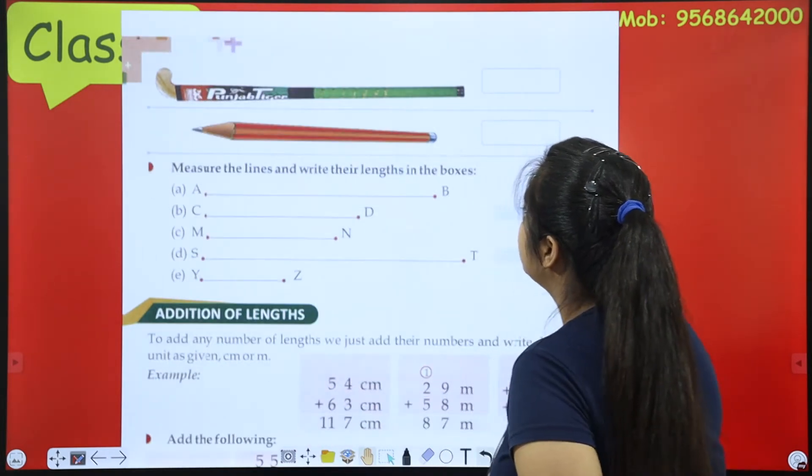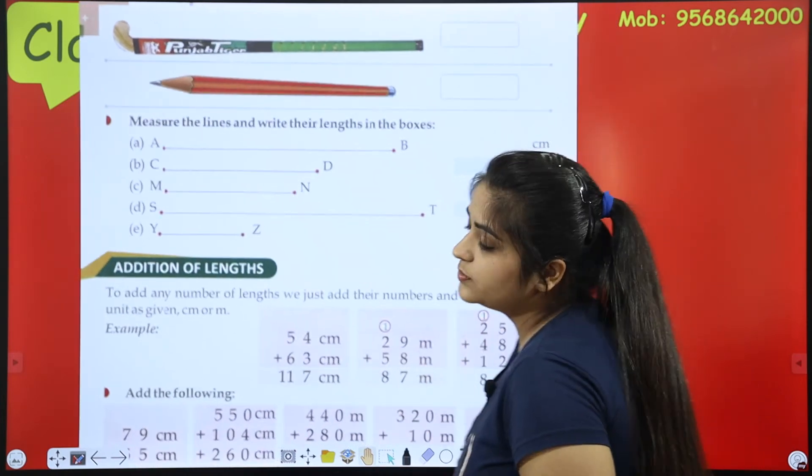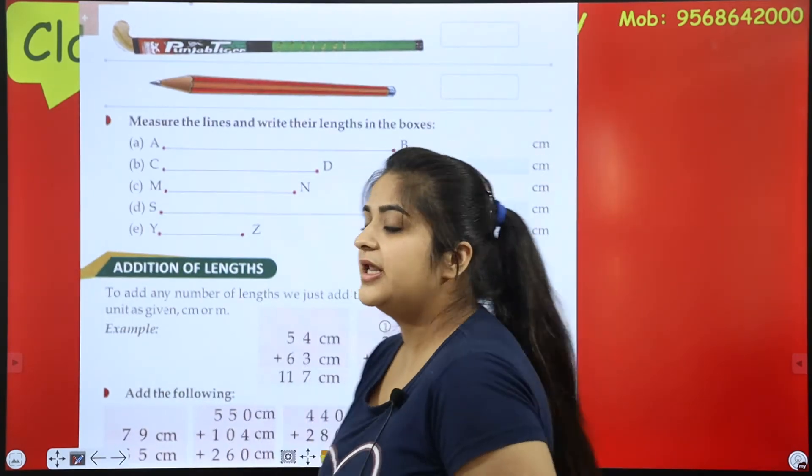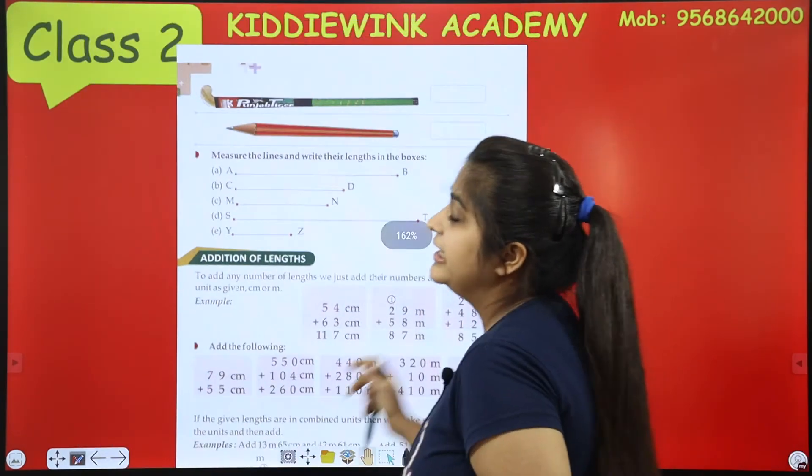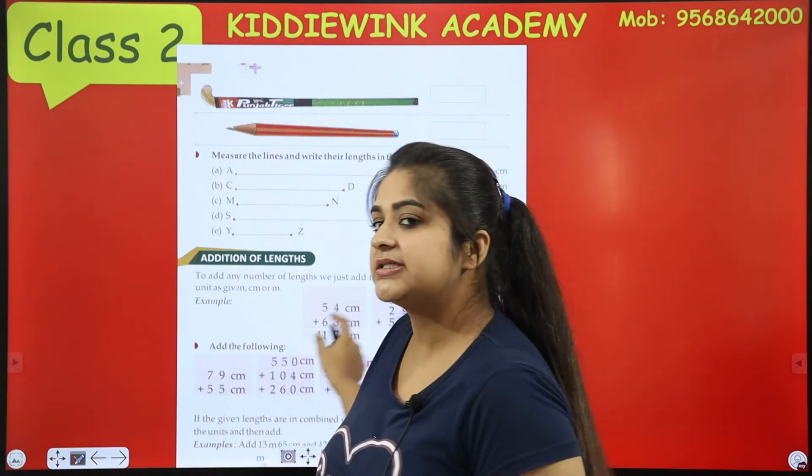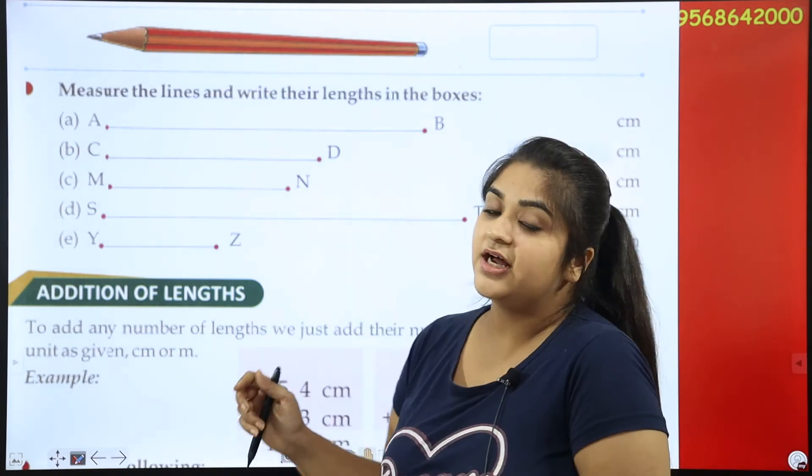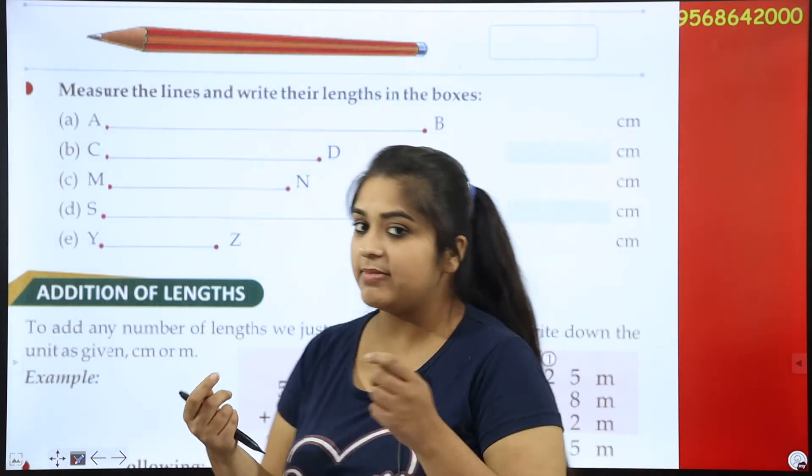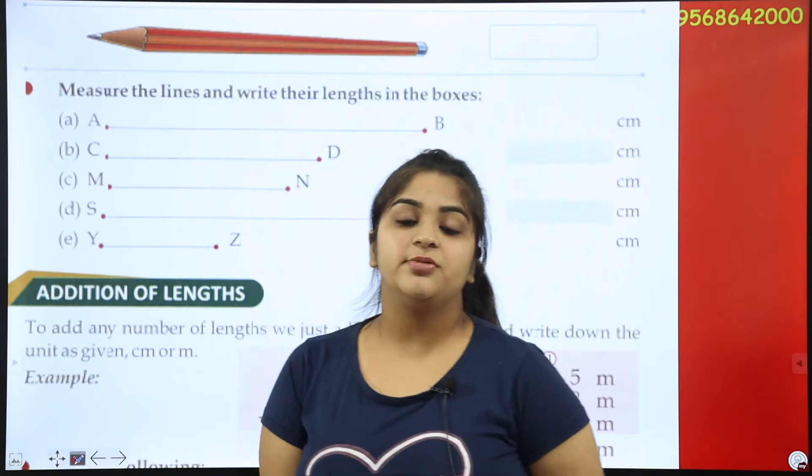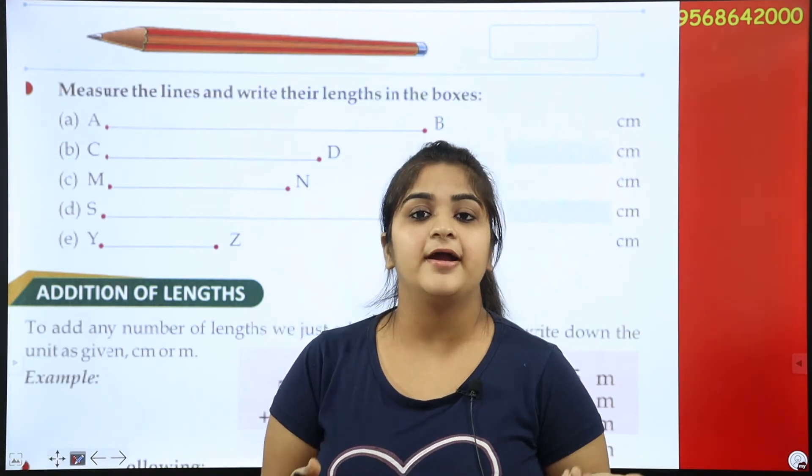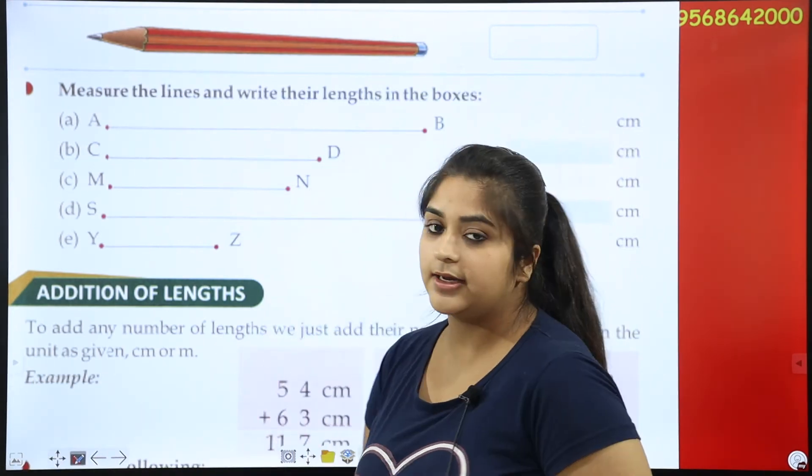Measure the line and write the length of the boxes. Now, measure the lines and write the length of the boxes. How many centimeters? 8, 4, 5, 6. How many centimeters of these lines? This is how many centimeters are. I'll measure it and write. I'm not showing. Because I'm going to measure it. Mails of the length on your screen. Mails of the length of your scale and your length. So, you'll do it from the book.